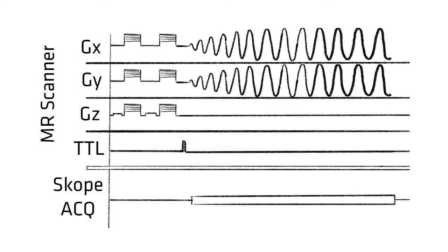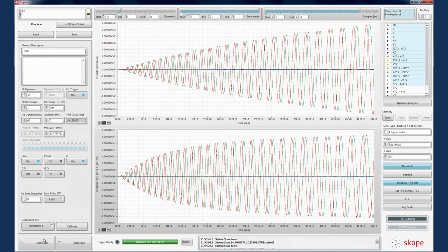Let's try three diffusion directions at B equals 1000 plus a B equals zero image. We set everything up as before, ensuring we capture the entire readout train. Hitting scan as before, we see data being processed by ScopeFX. We again see the k-space and gradient waveforms.